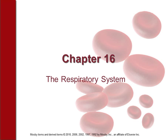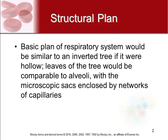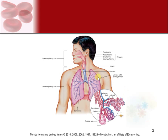Chapter 16, the respiratory system. For a basic structure, the respiratory system is actually very similar to a tree — inverted and totally hollow. If you flipped a tree upside down, the leaves of the tree would be comparable to the alveoli, which are the microscopic sacs enclosed by a bed of capillaries. The trunk splits out into branches, smaller and smaller, and then the little leaves on the end are the alveoli.